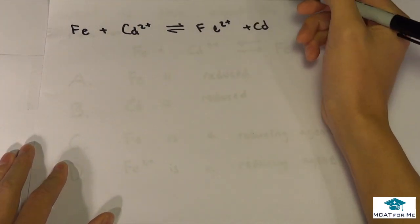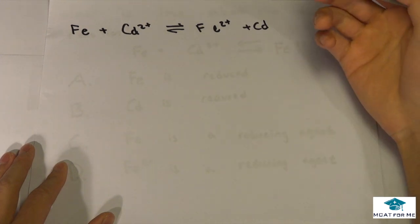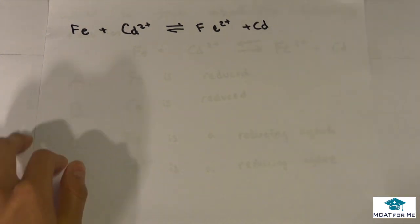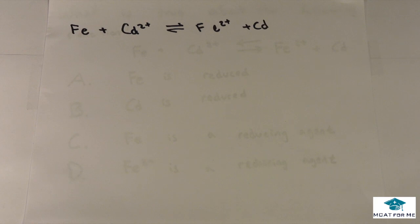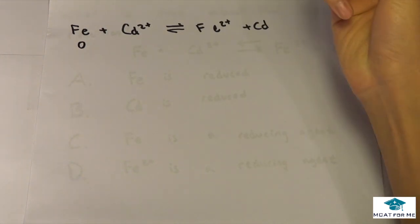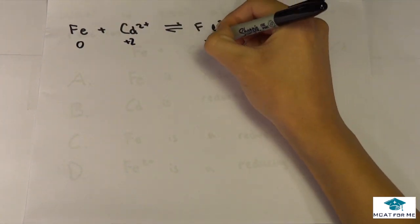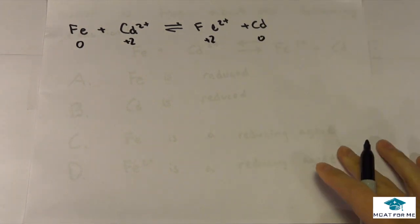So we have this reaction right here and the first thing we want to do is we want to give everything an oxidation number and remember anything that's all by itself should have a charge that's equal to its net charge, it should have an oxidation number equal to its net charge. So for example this Fe has a net charge of zero so it should have oxidation number of zero, Cd plus two, Fe plus two, and Cd zero.